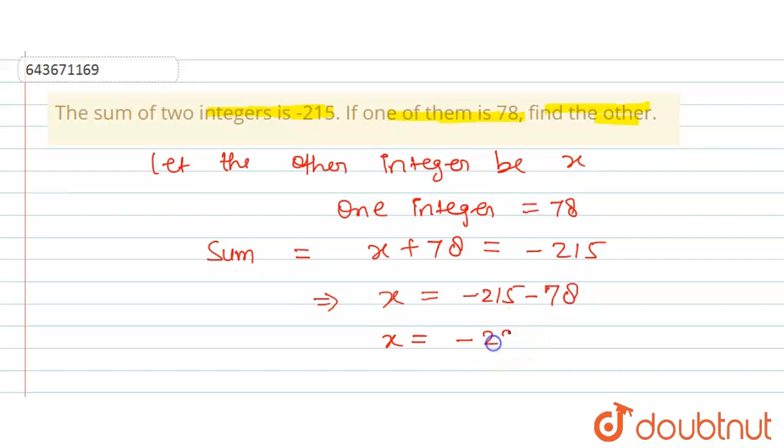So x is the other number. Hence, the other integer is equal to minus 293. This is the final answer for this question. Thank you.